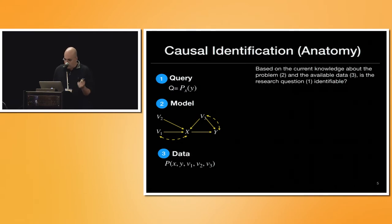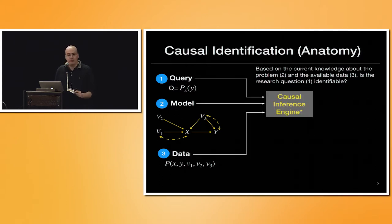Now the question that we are trying to answer so far is based on the current knowledge about the problem that is encoded in the causal model, and the available data that is number three, that is the observational data, is the research question, that is the query, Y given do x, or y sub x, identifiable. I like to call computable. I'm telling you identifiable because you may read the paper, and it's a name that we also use.